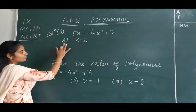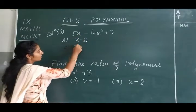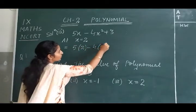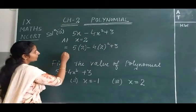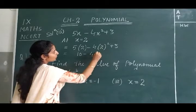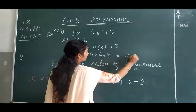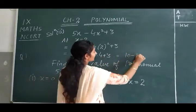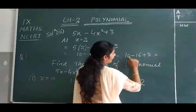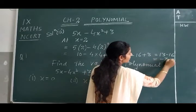Now we find the value at x = 2. We put 2 in place of x: 5(2) minus 4(2²) plus 3. So 5 times 2 is 10, and 2² is 4 so 4 times 4 is 16, plus 3. Adding first: 10 plus 3 is 13, minus 16, which equals -3.